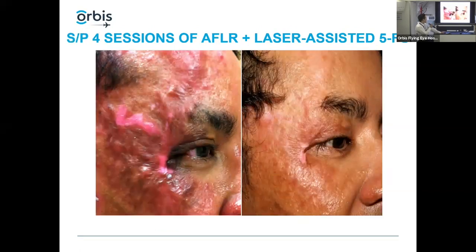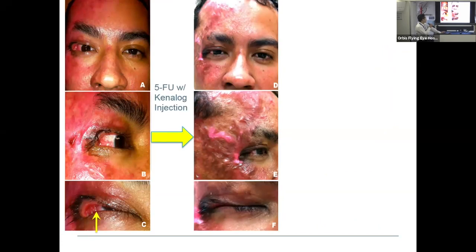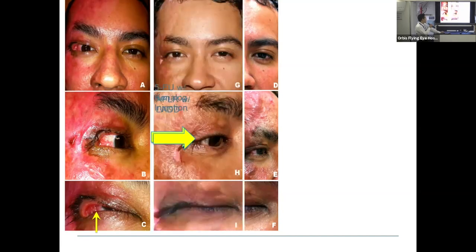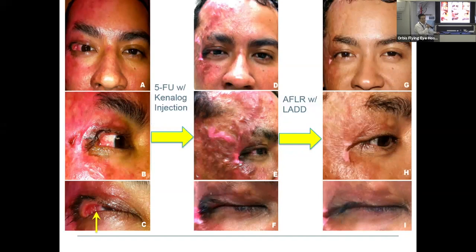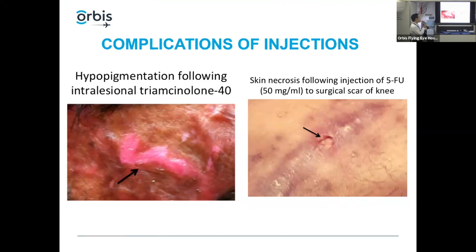This additional view from the side shows the improvement in skin texture. Intralesional injections are not a perfect solution and can have complications. Early in my career I injected too high a concentration of kenalog — nowadays I would use a much lower concentration or skip the kenalog altogether.